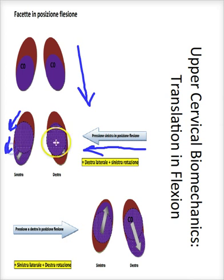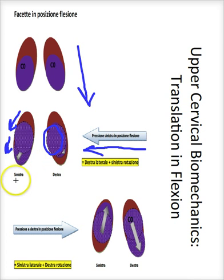Because we've started in flexion, we can only increase the flexion there while the right side moves towards a relative neutral. So in order to maximally treat the left occiput into a posterior glide, we would position in flexion with a left translation producing right side flexion and left rotation.